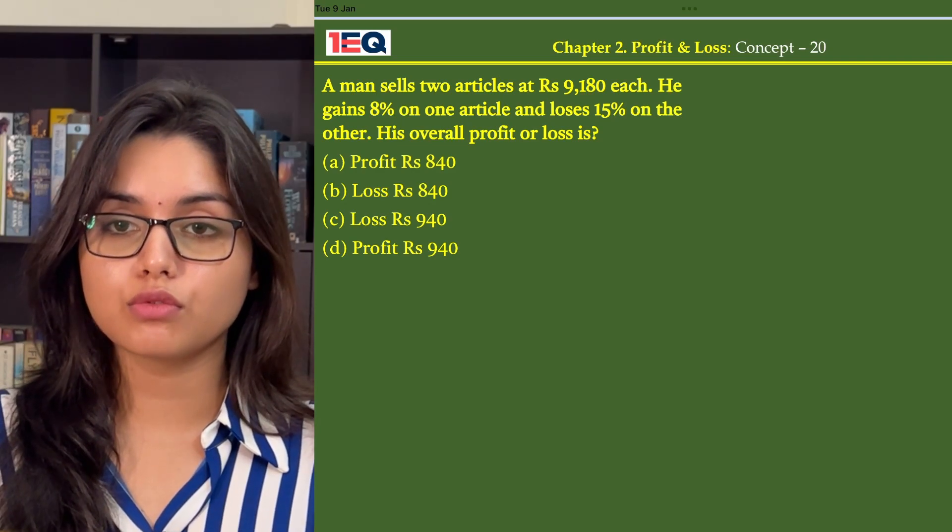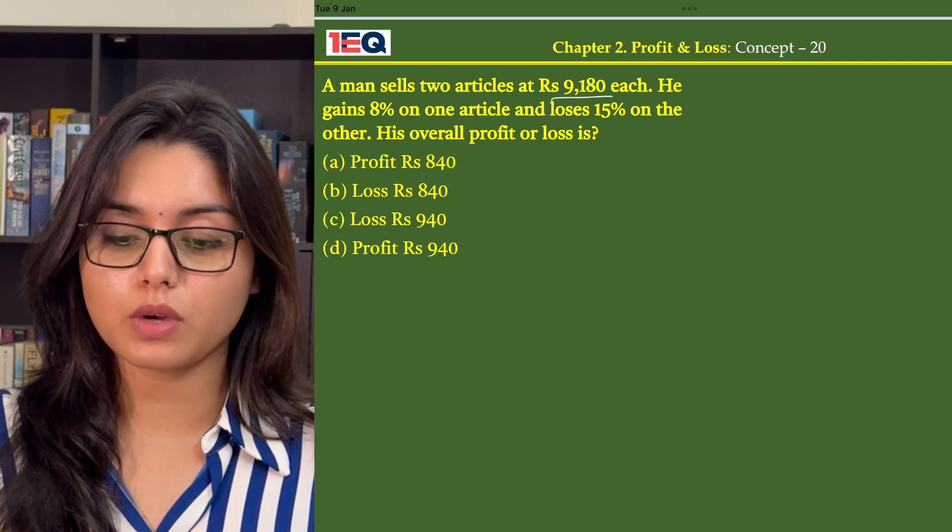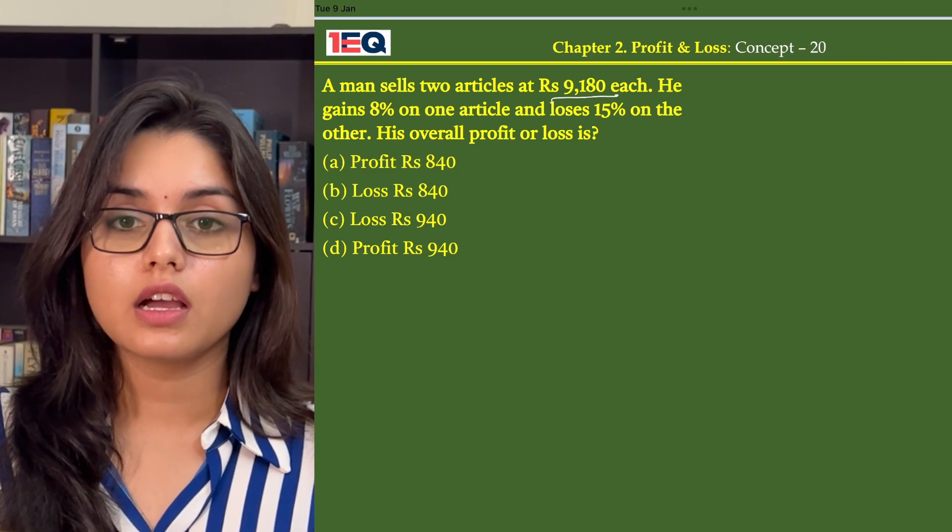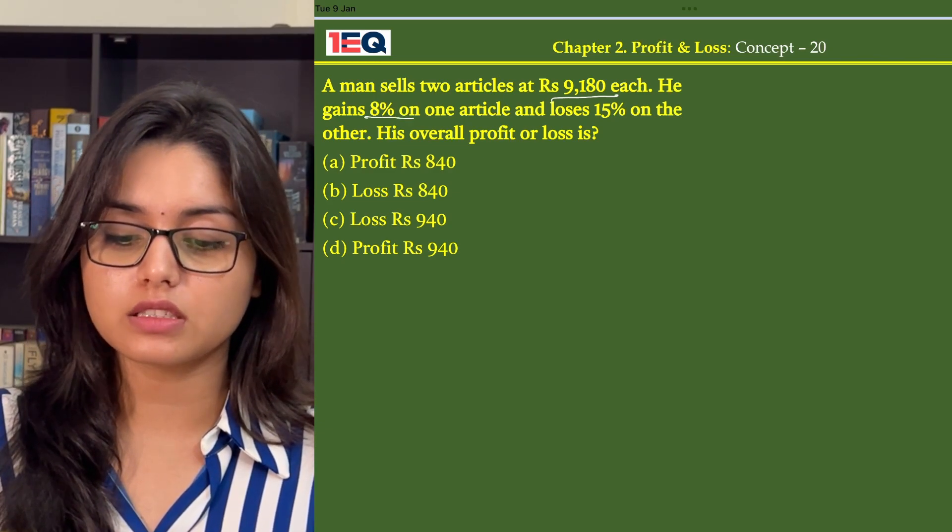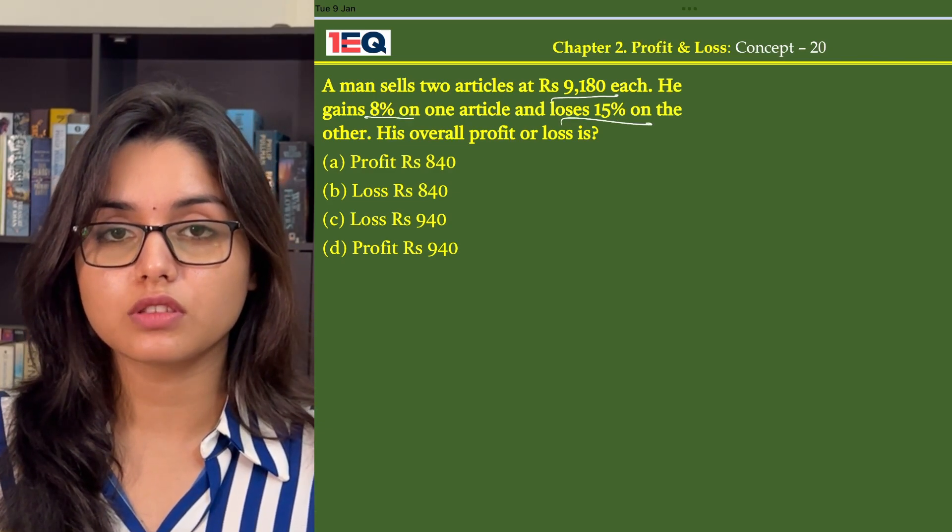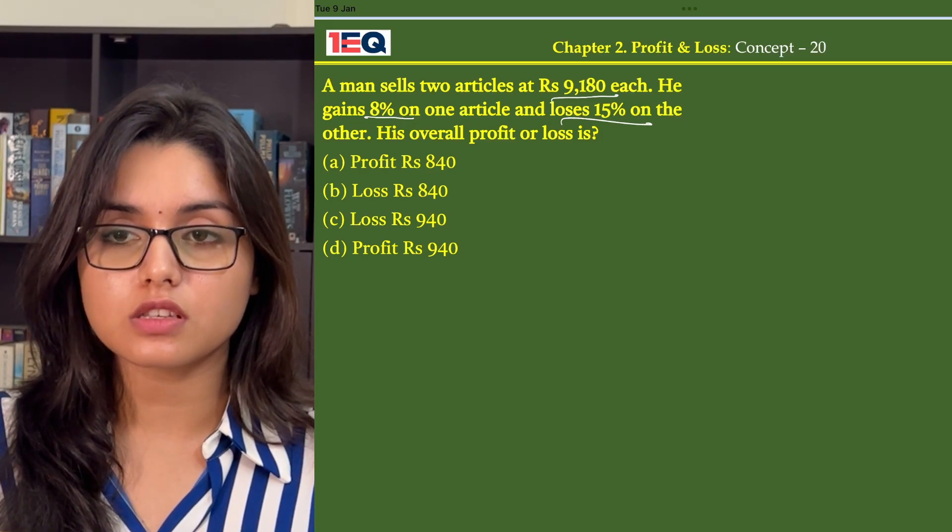A man sells 2 articles at Rs 9,180 each. He gains 8% on one article and loses 15% on the other. His overall profit or loss is?